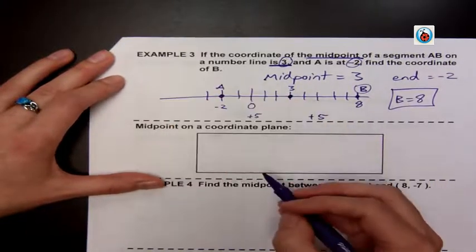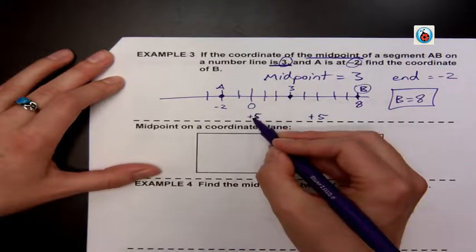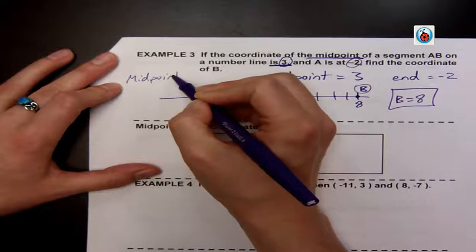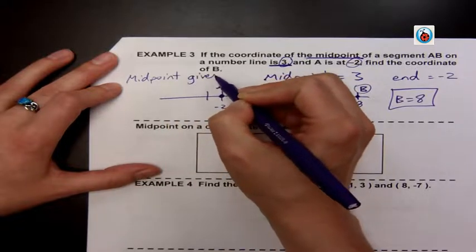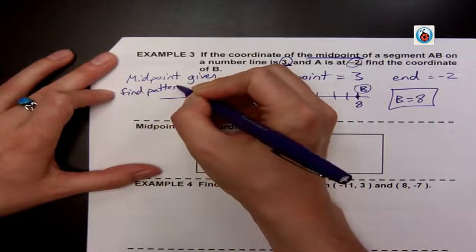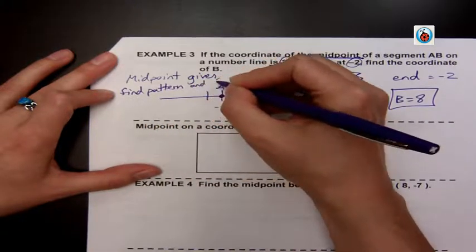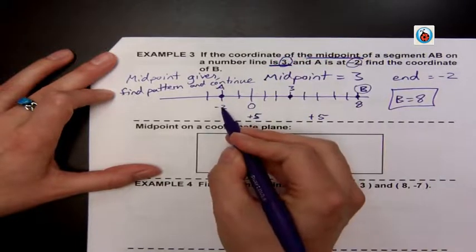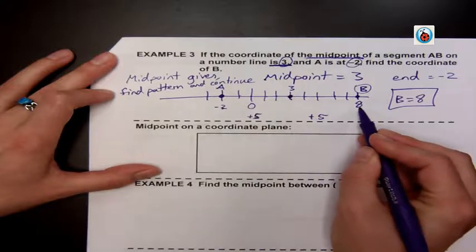So when they give you the midpoint, find the pattern and continue it. If our midpoint is given, find the pattern and continue. To get from negative 2 to 3, I add 5. I add another 5 to get to 8.